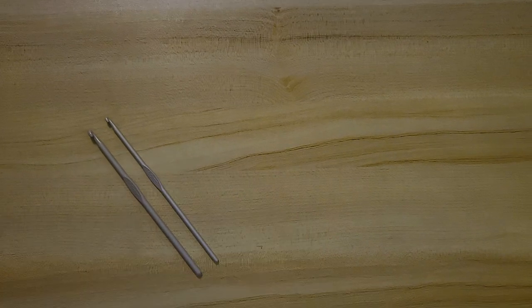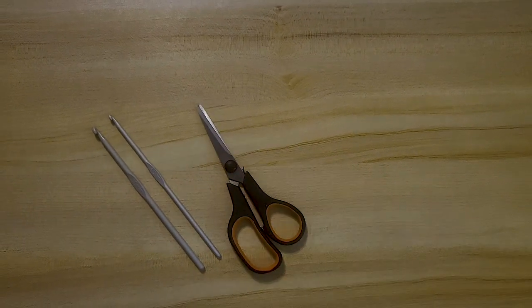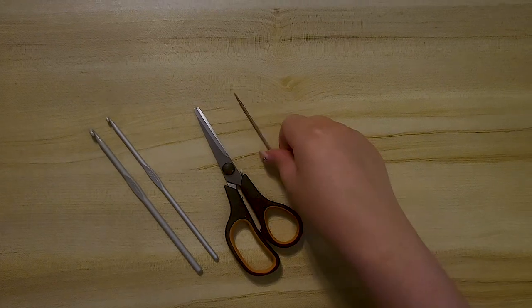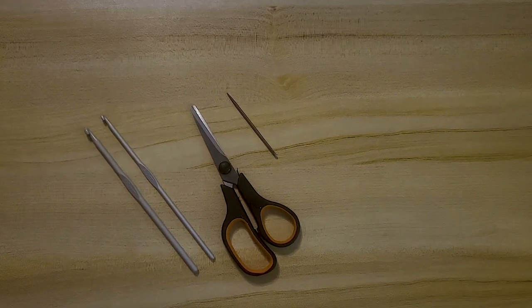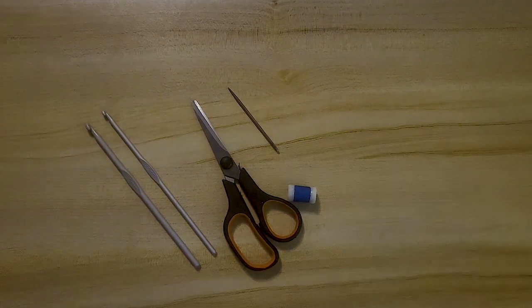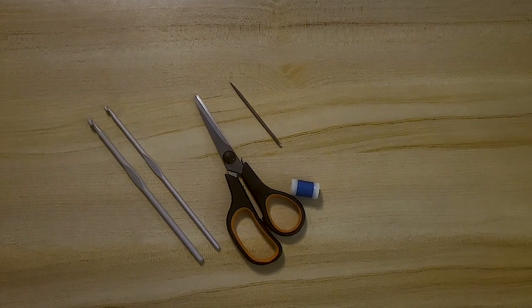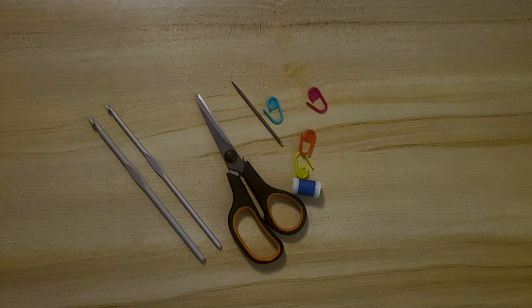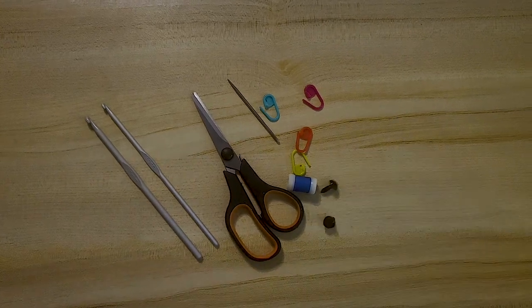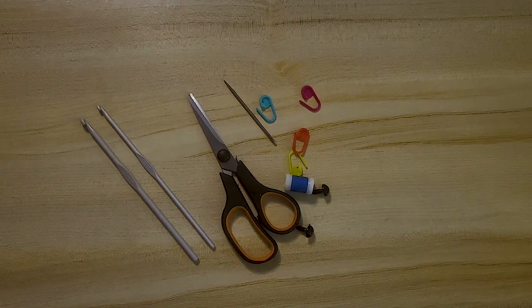You only need one hook by the way. Then you also need scissors, a large sewing needle, a stitch counter if you have one, and some stitch markers, two black eyes, or you can use the black thread to make the eyes and don't forget the stuffings too.